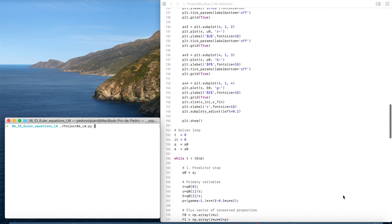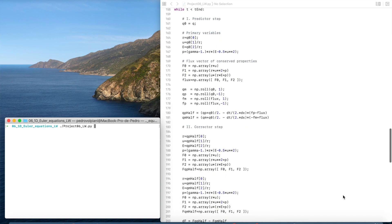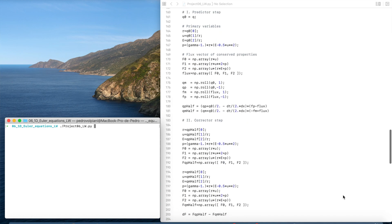So here we plot the initial condition, we enter the main loop, we apply the predictor and corrector steps and we plot the solution.